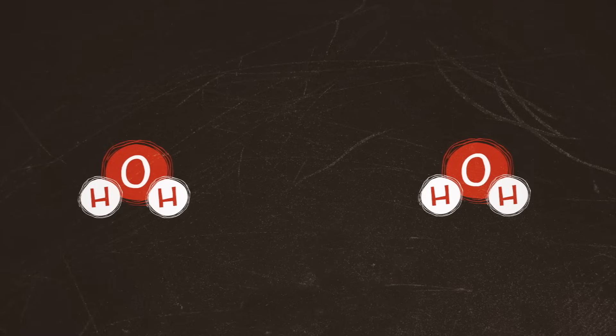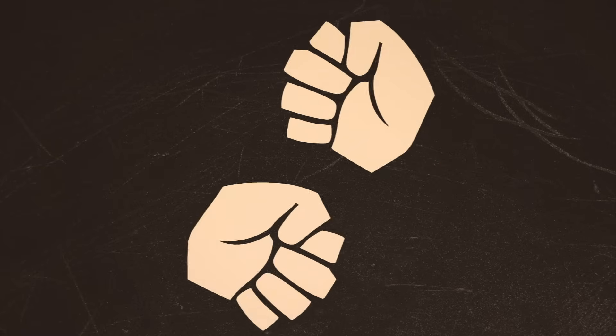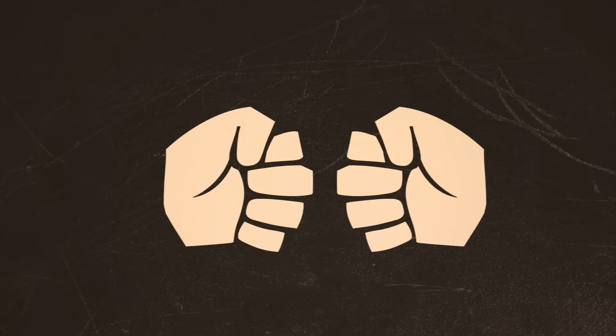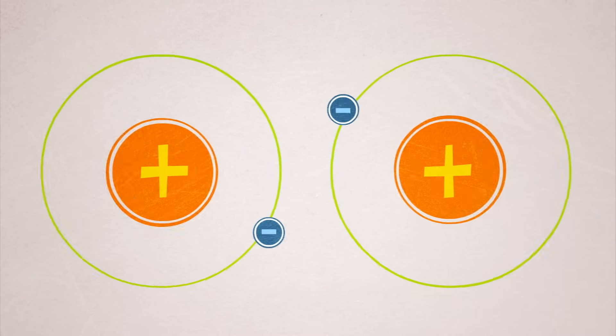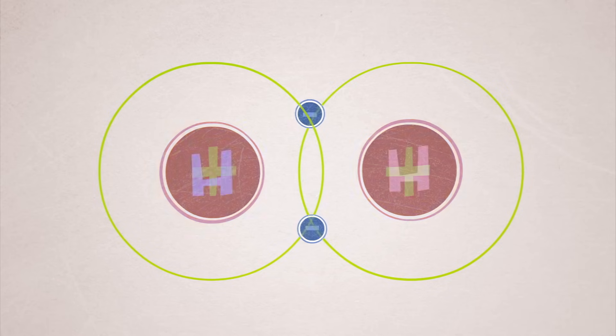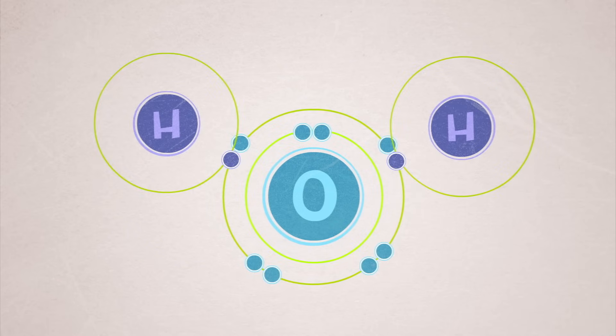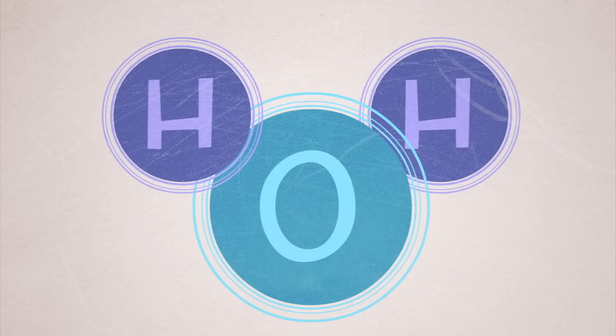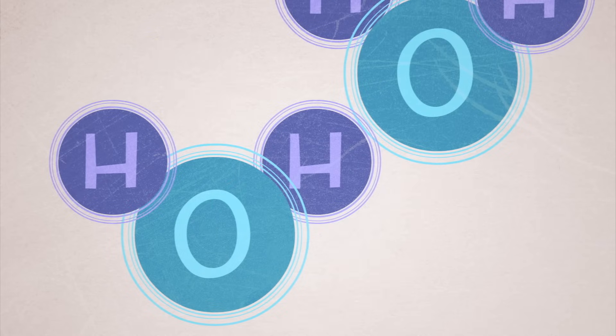Water has a special kind of interaction between molecules that most other substances don't have, and it's called a hydrogen bond. Now, remember that in a covalent bond, two electrons are shared, usually unequally, between atoms. In a hydrogen bond, a hydrogen atom is shared, also unequally, between atoms.